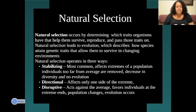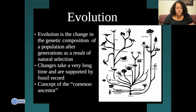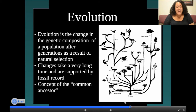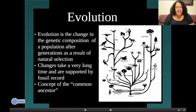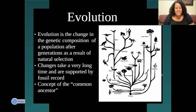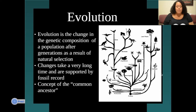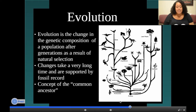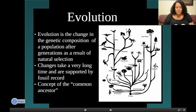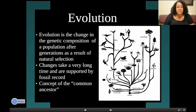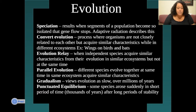Evolution is the change of genetic composition of a particular population resulting from natural selection. Changes take a very long time and are supported by the fossil record. We have the concept of the common ancestor — all species, human and alike, come from a common ancestor, as seen in this picture where everything branches off. There are multiple types of evolution: speciation, convergent evolution, evolutionary relay, parallel evolution, gradualism, and punctuated equilibrium.